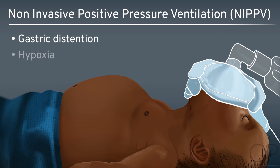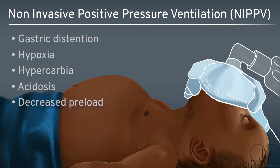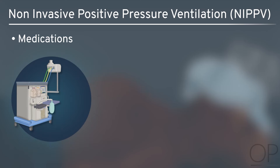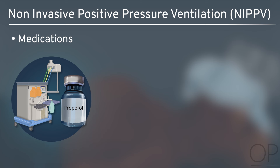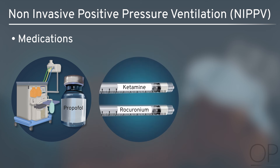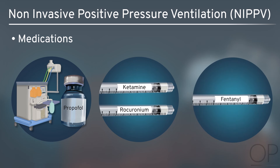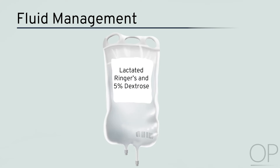Non-invasive positive pressure ventilation can result in gastric distension, which decreases functional residual capacity and pulmonary compliance while simultaneously increasing the risk of aspiration of gastric contents directly into the lungs. In the setting of Tetralogy of Fallot, these ventilatory changes can lead to hypoxia, hypercarbia, acidosis, and decreased preload — all potential triggers for TET spells. Deep inhalational anesthesia with sevoflurane or large doses of propofol can cause a decrease in systemic vascular resistance and significant hypotension in neonates. Ketamine and rocuronium are an effective IV combination that do not decrease systemic vascular resistance. Fentanyl IV prior to endotracheal intubation decreases the risk of catecholamine surge and infundibular spasm that may precipitate a TET spell.